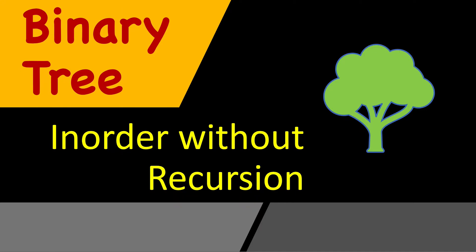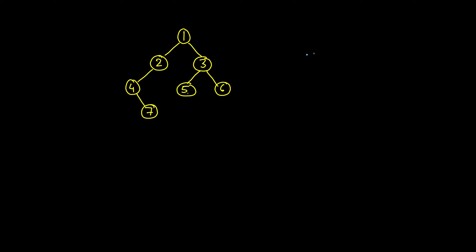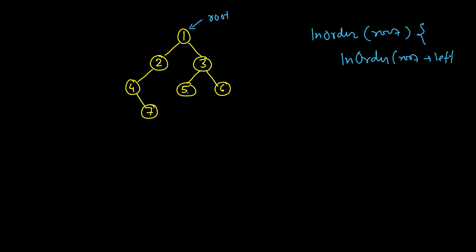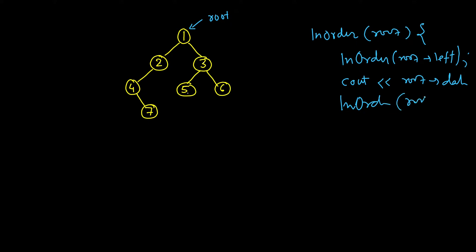When we do it with recursion, implicitly we are using the recursion stack when we are calling one function nested into another. For example, if this is the root node, we had seen the definition of inorder where we used recursion and we called inorder on the left subtree. When this inorder returns completely, this inorder of two will in turn call its left, and now left is null so it will start returning back. After the left part returns we print the root's data and then we call inorder of root right.